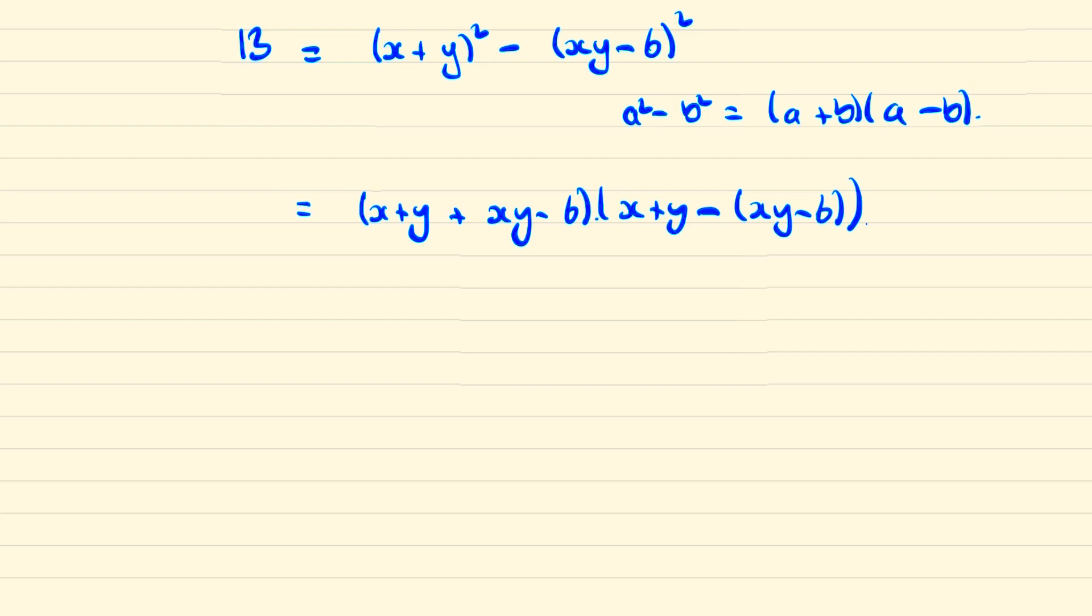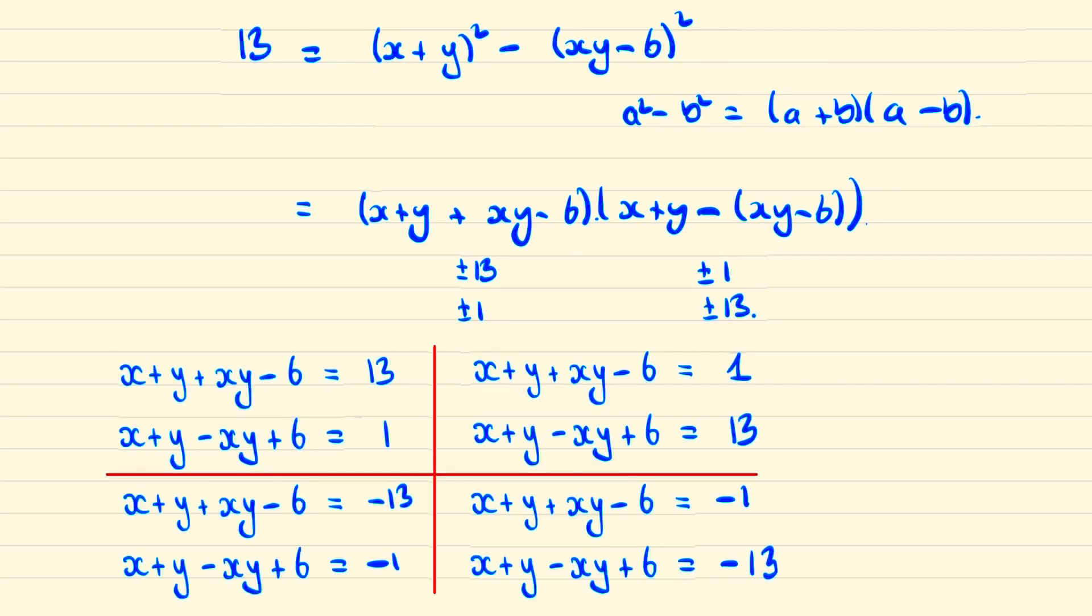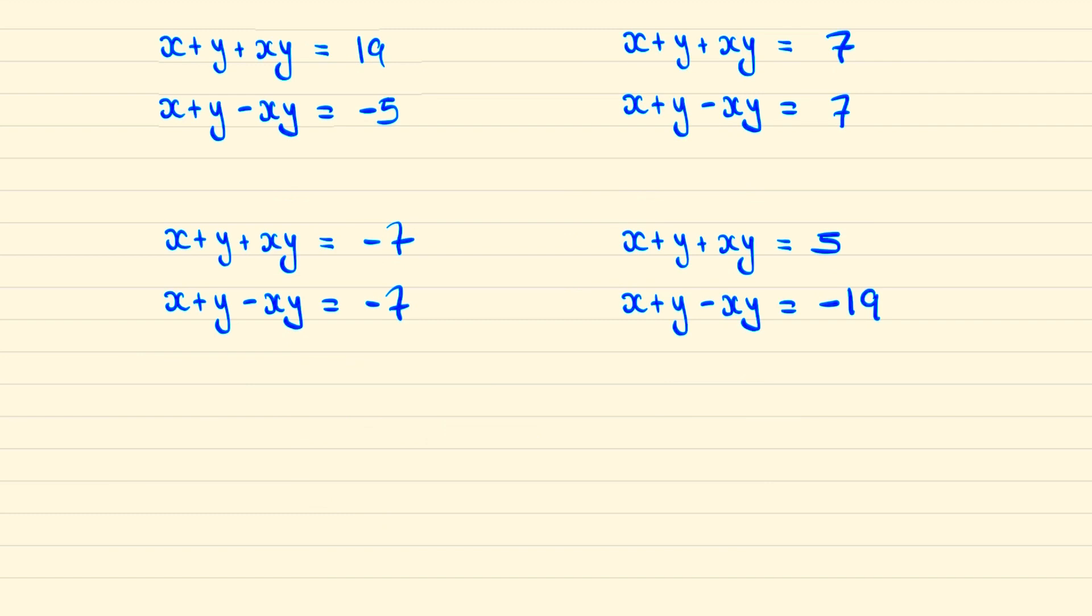And since this expression must multiply to make 13 then we could have it be plus or minus 13 and plus or minus 1 or plus or minus 1 and plus or minus 13. So we're now solving the following four systems of equations. We can plus and minus 6 respectively so that we have now the following four systems.